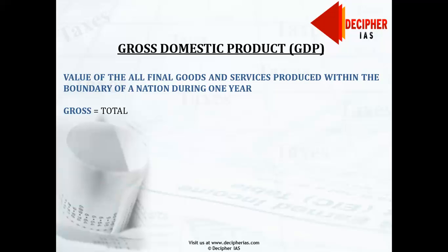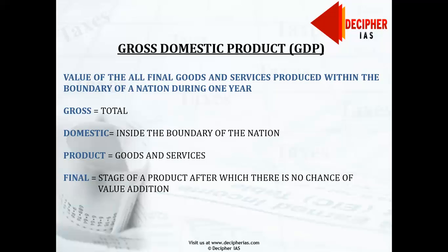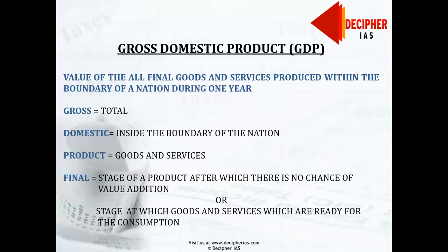Gross — gross means the same thing to economics as 'total' means to mathematics. Domestic — domestic means inside the boundary of the nation or the country and by its own capital. Product — product is a word to define goods and services all together. And last comes 'final' — final means the stage of a product after which there is no change or value addition in it, or simply goods and services which are ready for the consumption of consumers.